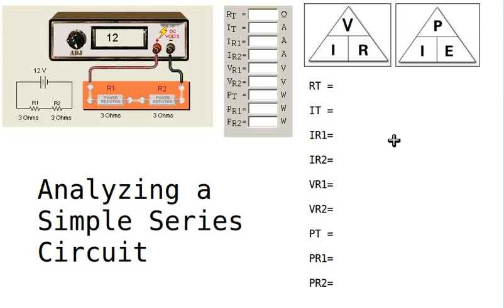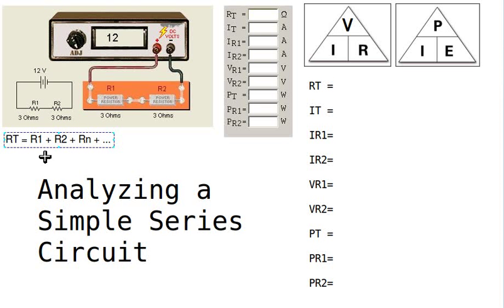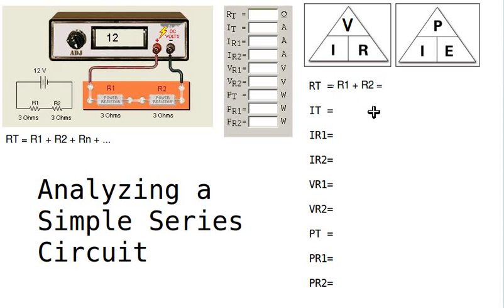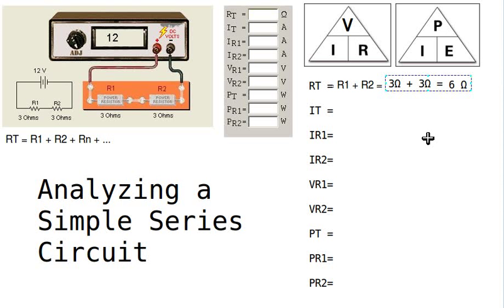First, let us calculate the total resistance of this circuit. In a series circuit, the resistances add up. The total resistance is equal to R1 plus R2 plus Rn — however many resistors we have; Rn means the nth resistor. So in this case we just have R1 and R2, and our two resistor values are 3 ohms each, so it's simply 3 ohms plus 3 ohms, giving us a total resistance of 6 ohms.